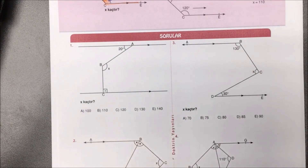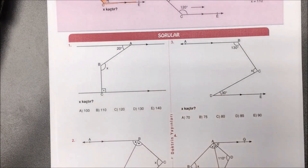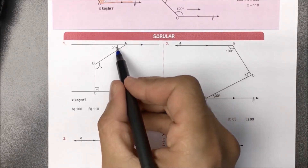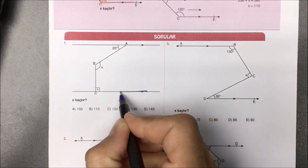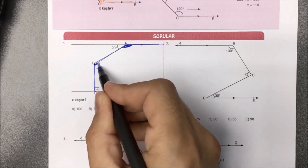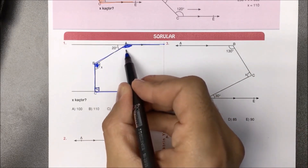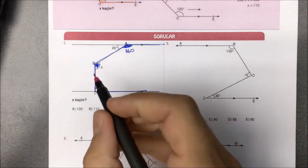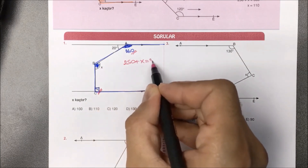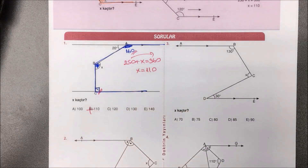Birinci soruya bakacak olursak X kaçtır diye sorulmuş. Bu soruyu da kalem ucu kuralından çözeceğiz. Paralel iki doğru arasında birinci açı, ikinci açı ve üçüncü açımız var; bu üç açının toplamının 360 derece olduğunu biliyorum. 20'nin sağ tarafına 180'e tamamlaması için 160 derece gelecek. Toplayalım: 90 artı 160 yani 250 gelecek; artı X eşittir 360. 360'dan 250'yi çıkartırsak aradığımız X yanıtı 110 derece olarak bulunmuş olur.